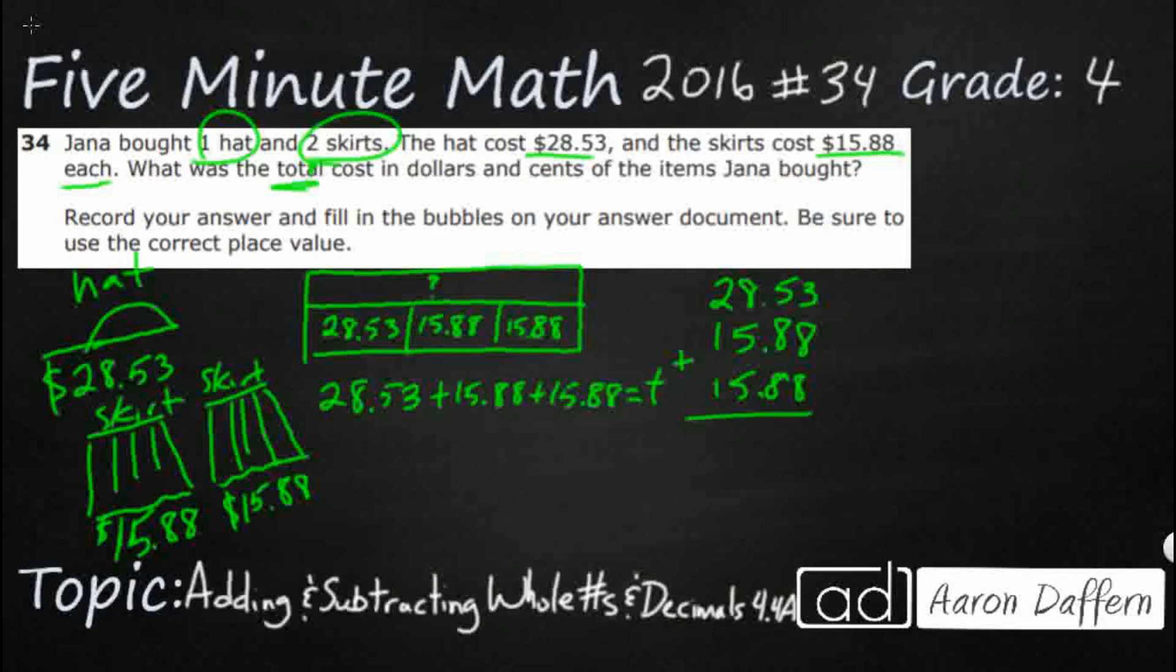When we're adding decimals, make sure the decimals are lined up. Bring that decimal down. And once you do that, you just add the rest just like normal. You don't have to worry about the decimals once they're lined up and the decimal's brought down. 8 and 8 is 16. That's a double. Add that 3. It's going to be 19.